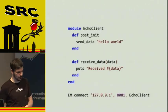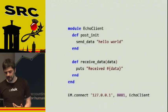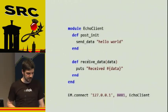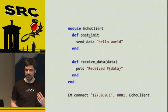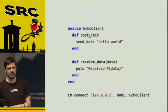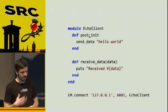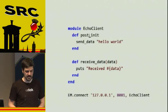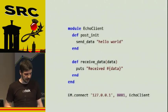The client looks pretty similar. We put it in a module, and the difference is that there's a method called post_init, which is the method called when the connection has been created. We use that moment to send our hello world out. And at some later point, receive_data will be called again and we'll get data back.